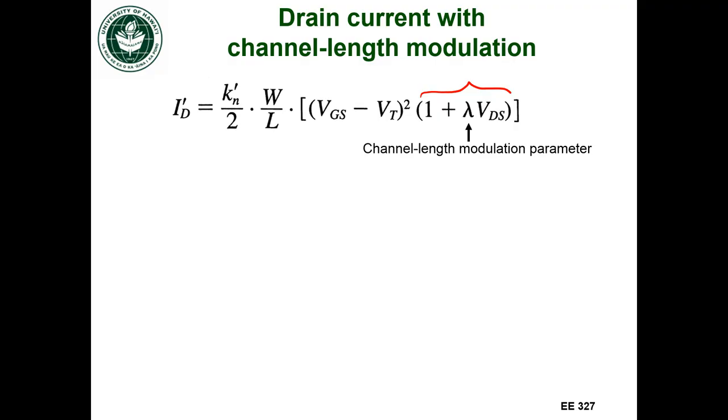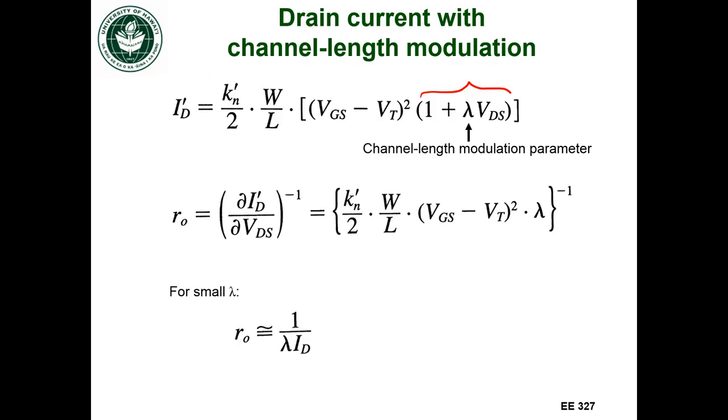Like I said, we also have a resistance associated with that. That's R-naught. So if we take the inverse of the differential of the drain current with respect to drain to source voltage, then we get this equation to tell us what that resistance R-naught is. And if this channel length modulation parameter is small, then we can simplify that a bit to this equation here.